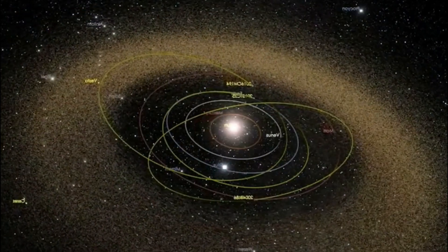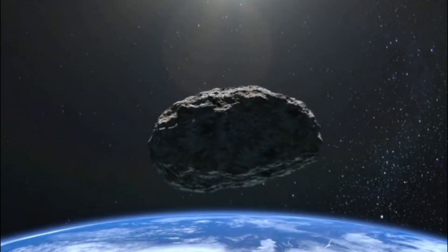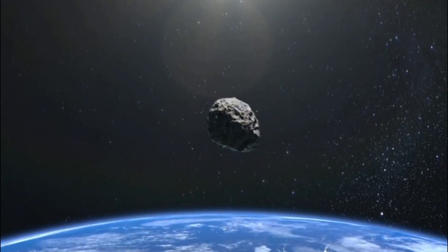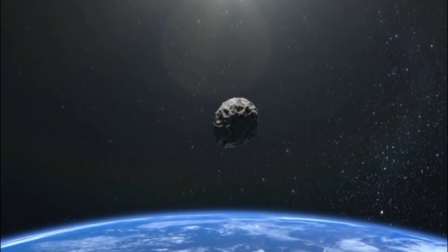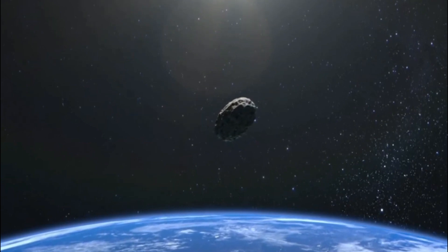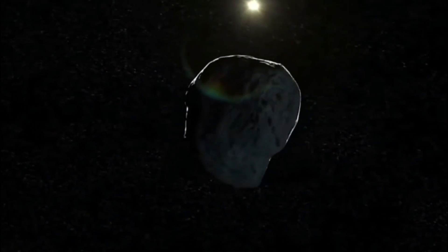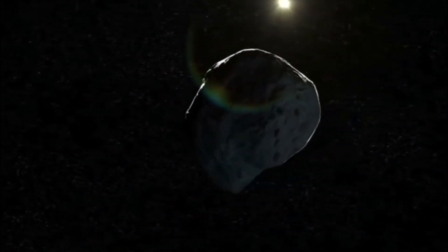In the vast expanse of space, there are millions of asteroids orbiting the Sun. These small, rocky bodies range in size from a few meters to hundreds of kilometers across. Some asteroids even contain valuable resources, like water and metals, making them potentially valuable targets for exploration and mining.